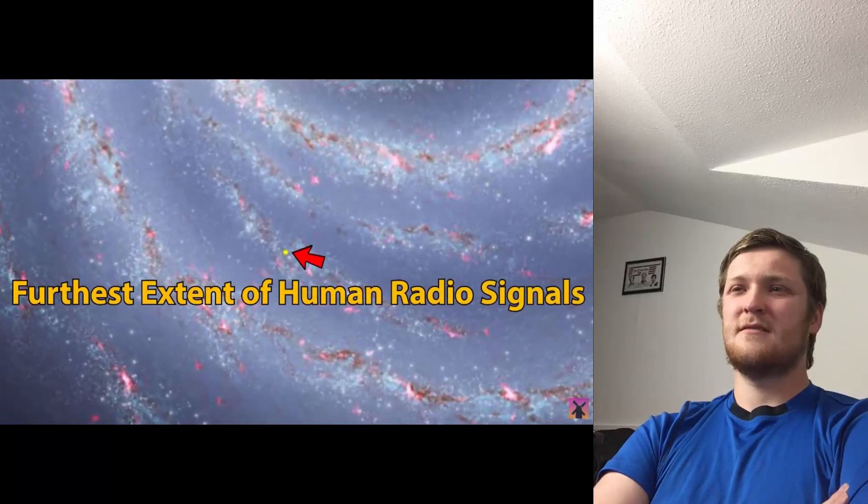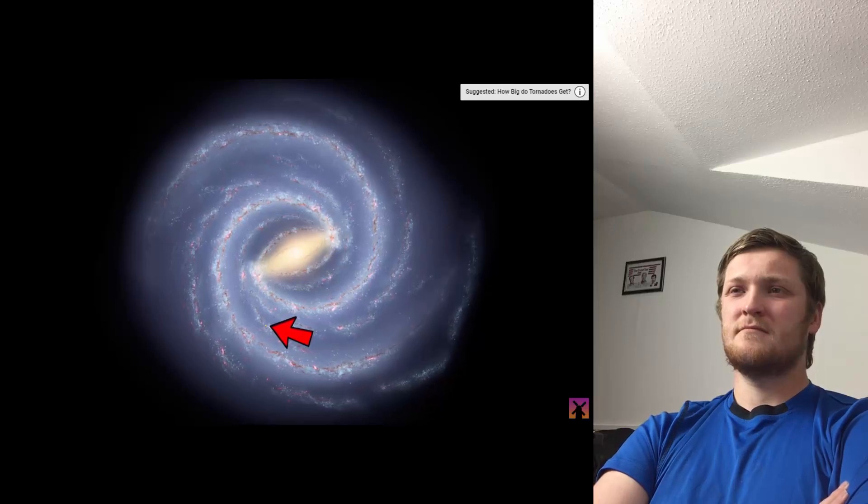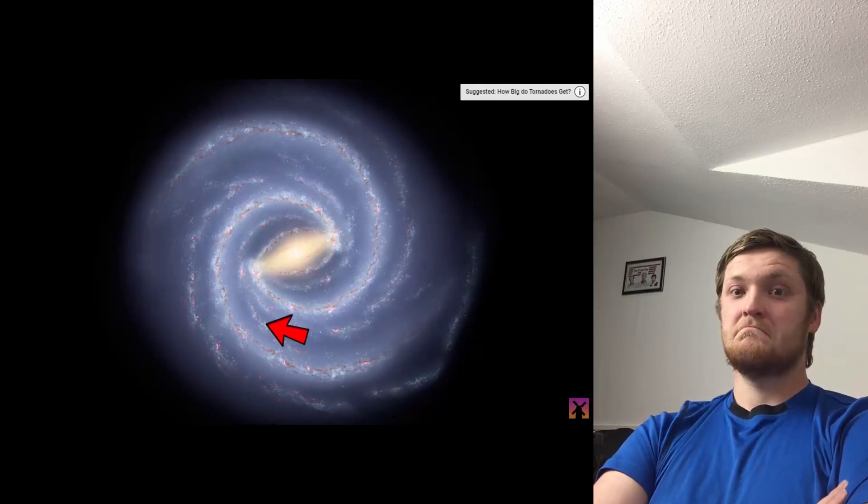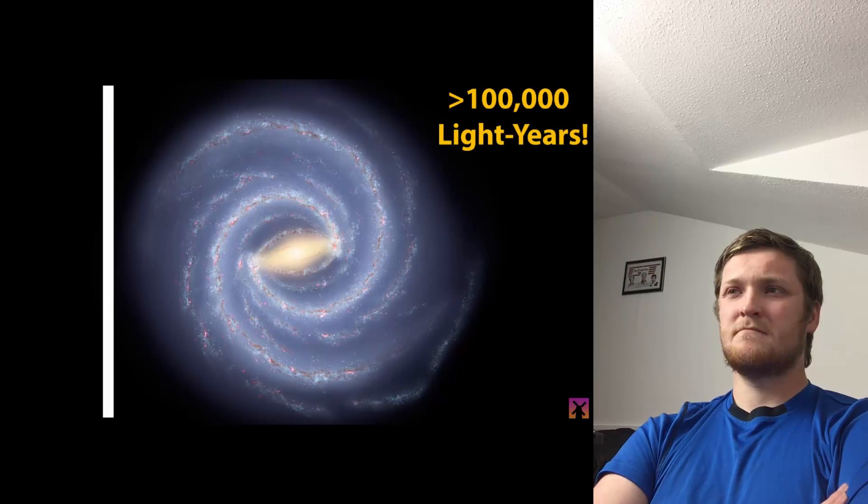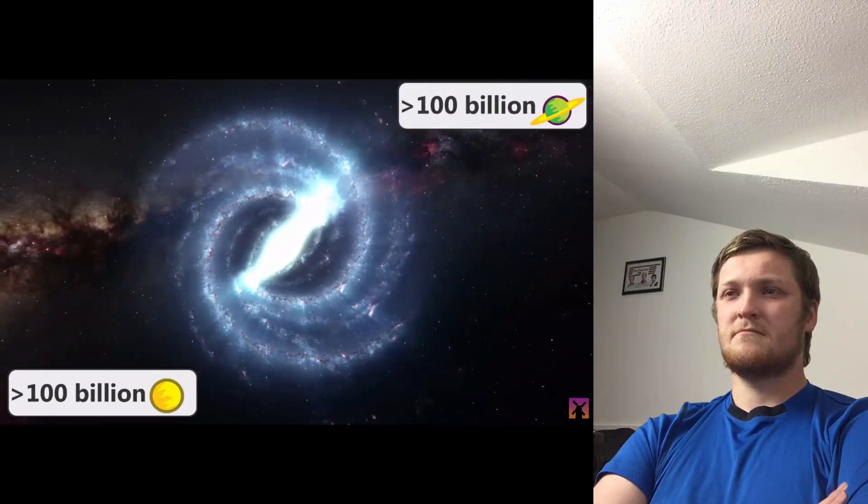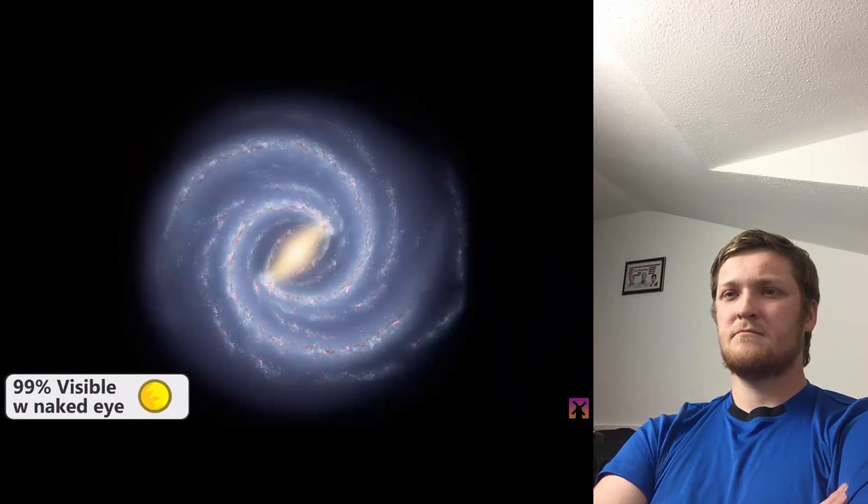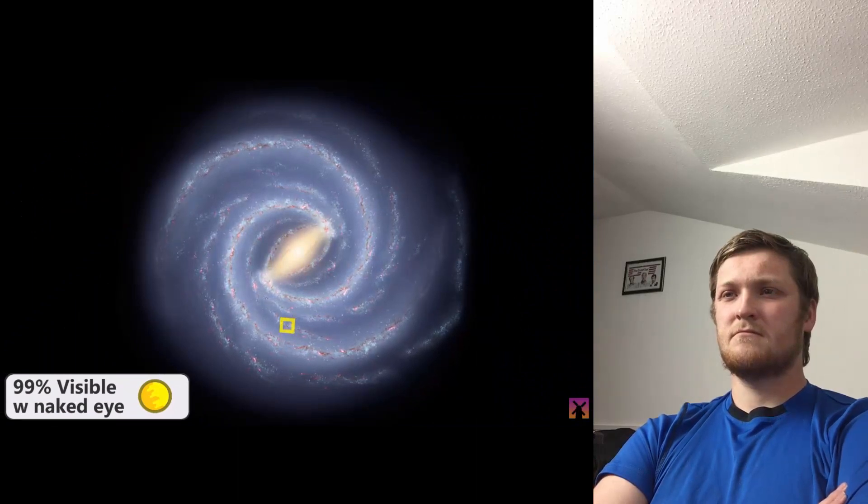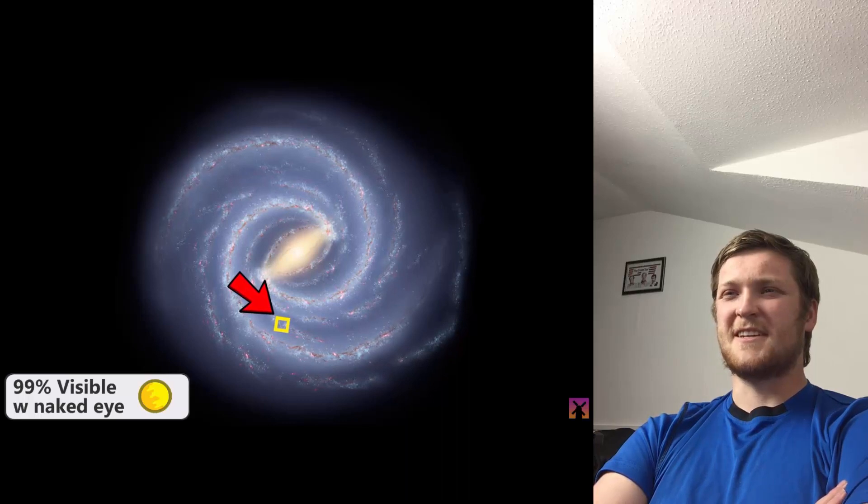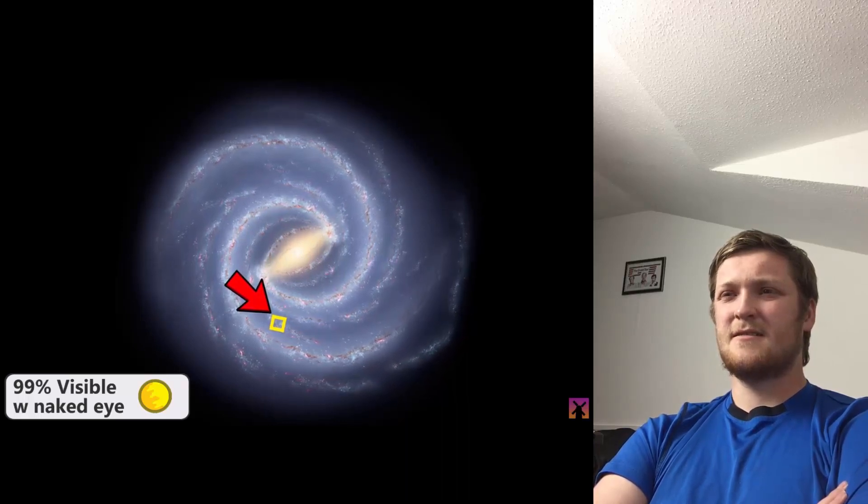When we zoom out even further, we can see the entire Milky Way galaxy, inside of which Earth is located right here. This yellow dot is the furthest extent of humanity's radio broadcasts throughout history, which means any possible aliens who live outside this range are totally unaware of humanity's presence. It's complete silence outside this yellow dot as far as we're currently aware. The entire galaxy spans over 100,000 light years from end to end. There are over 100 billion stars and over 100 billion planets inside our galaxy, but you've never seen the full glory of the galaxy at night because 99% of the stars you can see with the naked eye are limited to this small, tiny region right here.